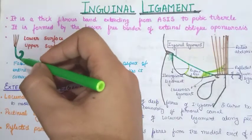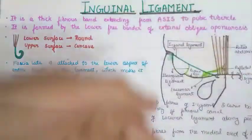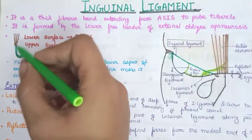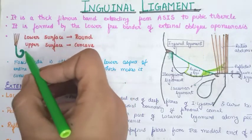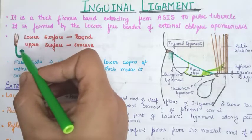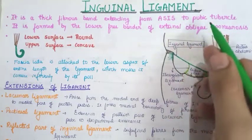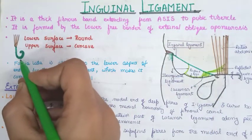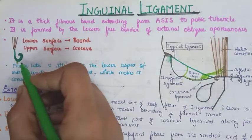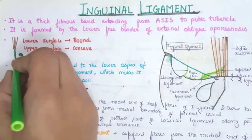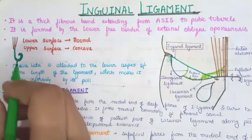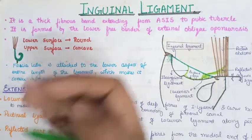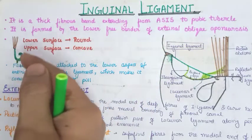In the sagittal section of the external oblique, you can see the fleshy muscle part and the aponeurosis, which forms a curved portion. As it extends downward, it curves around to form the inguinal ligament. The ligament has two surfaces: an upper concave surface and a lower convex surface. The lower surface is convex inferiorly because the fascia lata is attached to the lower aspect of the inguinal ligament, pulling the external oblique aponeurosis and making it convex inferiorly.